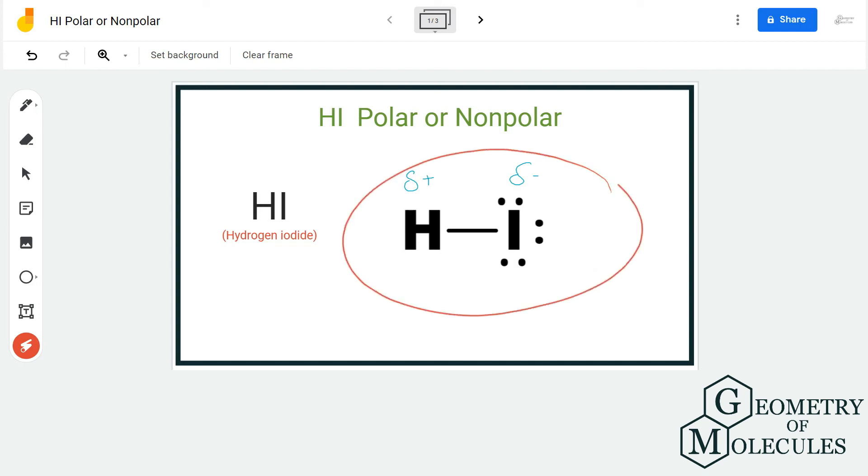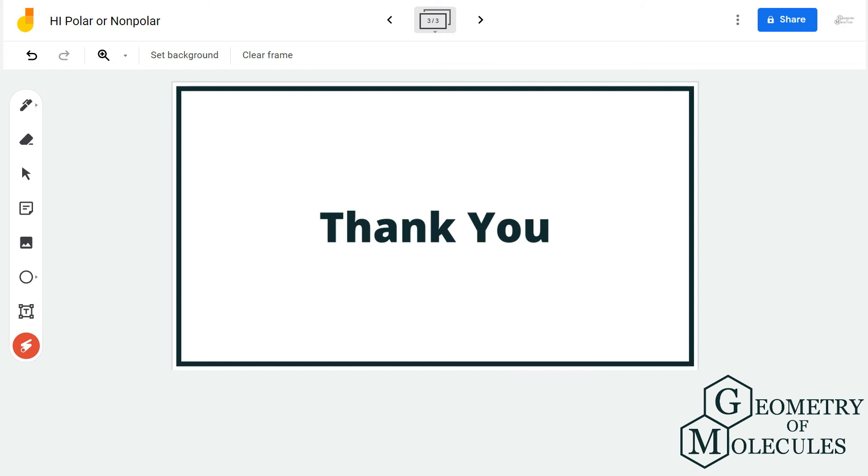So as there are uneven distribution of charges and formation of poles in this molecule, hydrogen iodide is a polar molecule. I hope this video helps you to find out why hydrogen iodide is a polar molecule.